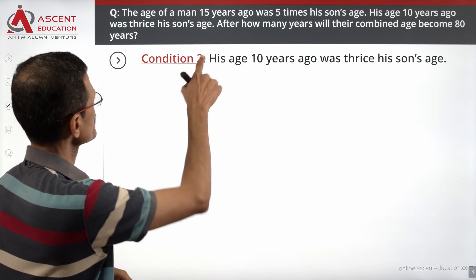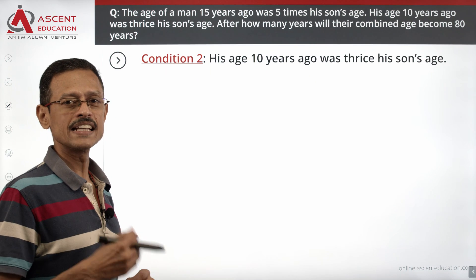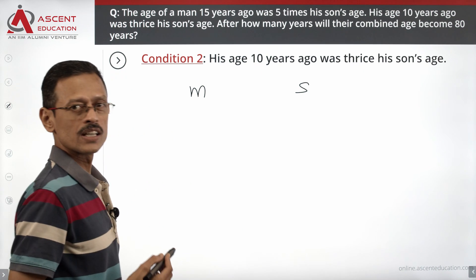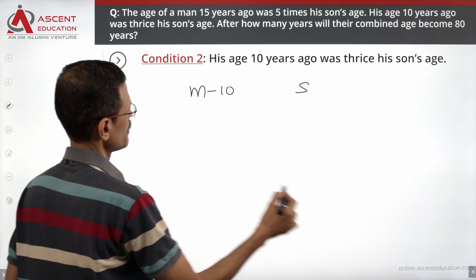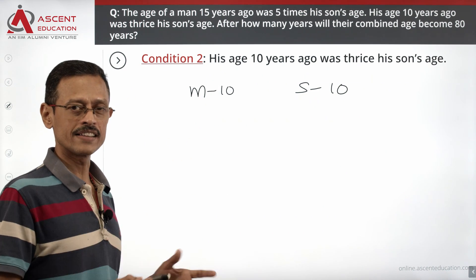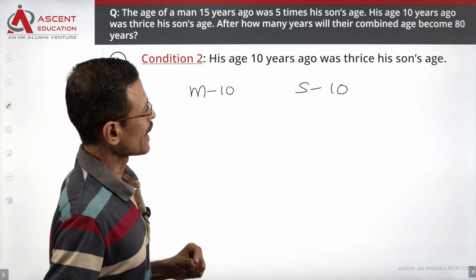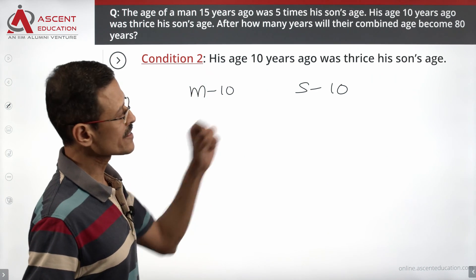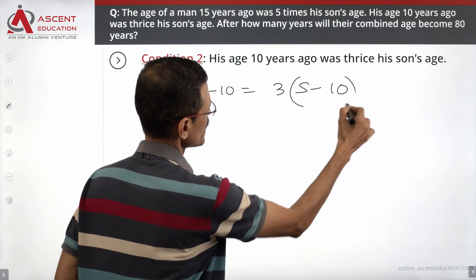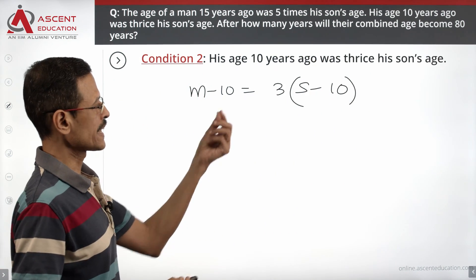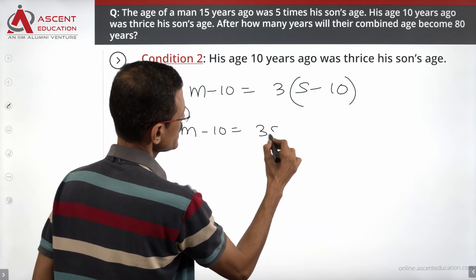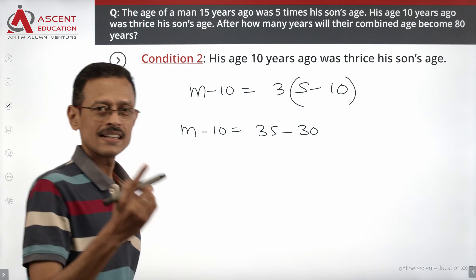Let's go to information 2, which is the comparison of their ages 10 years back. 10 years back, the age of the man would have been m minus 10. 10 years back, the age of the son would have been s minus 10. 10 years back, the man's age was thrice the age of his son. So: m minus 10 equals 3 times (s minus 10). Expanding: m minus 10 equals 3s minus 30. This is the second equation.